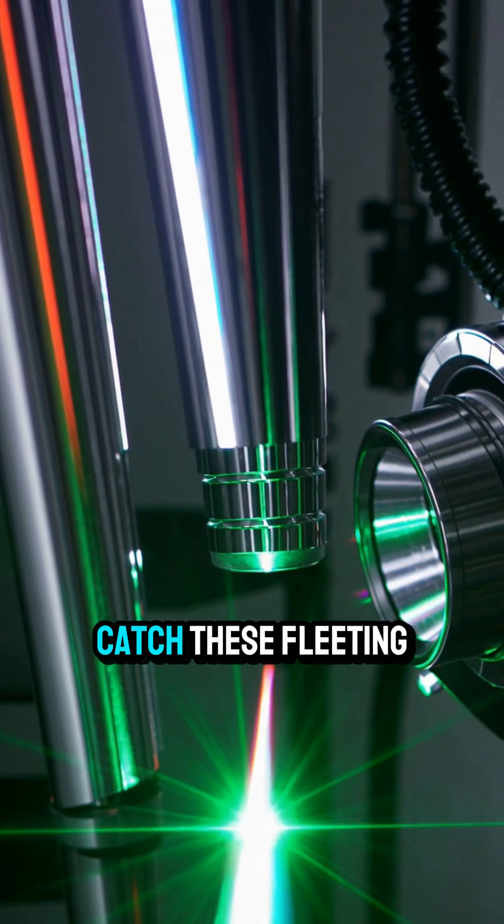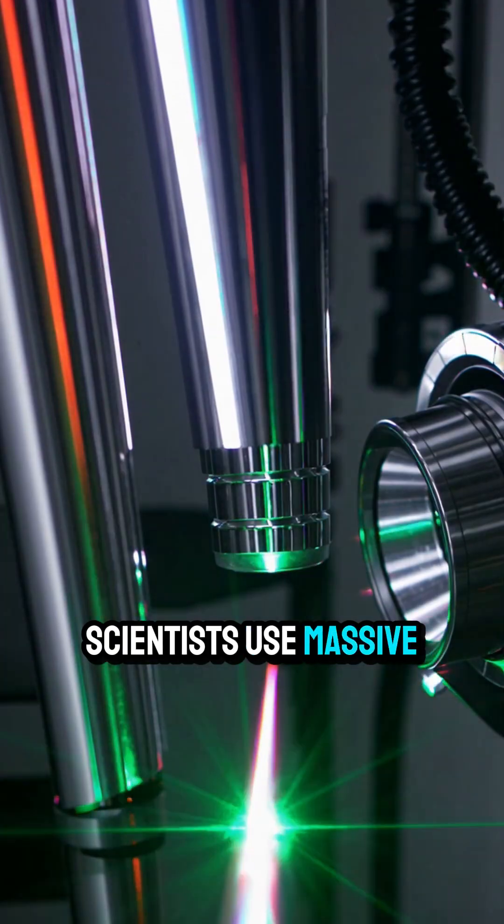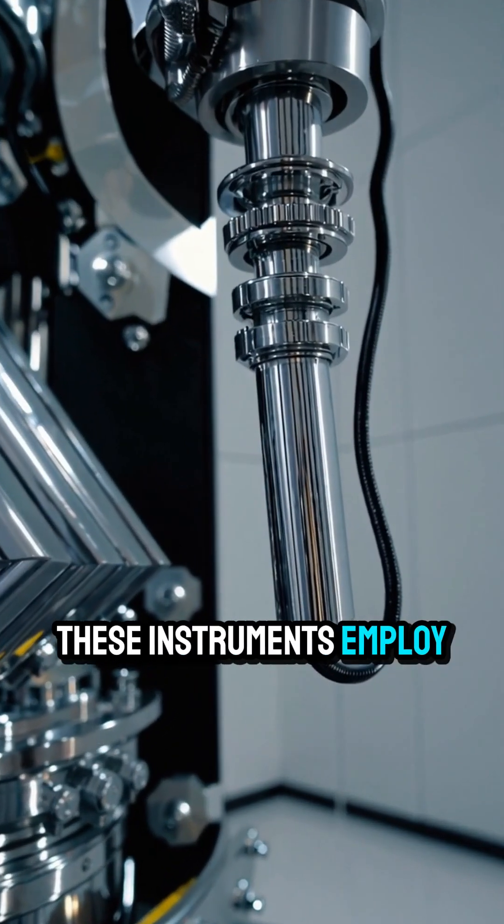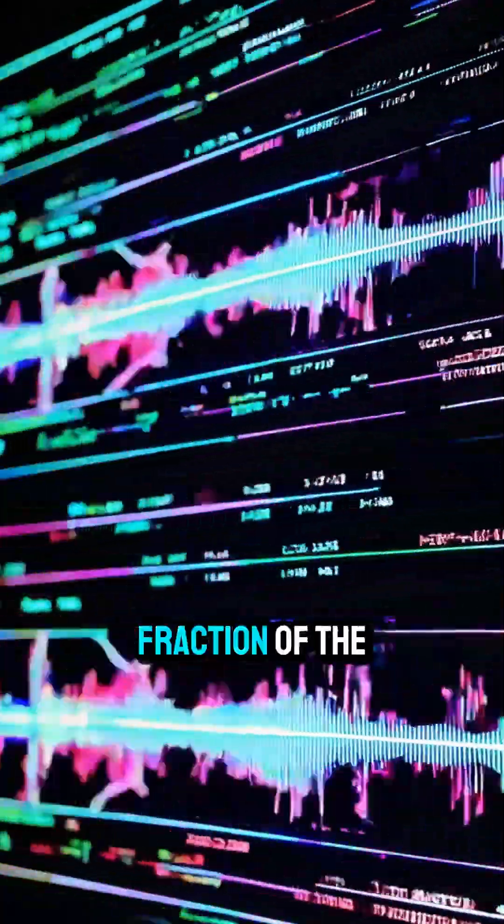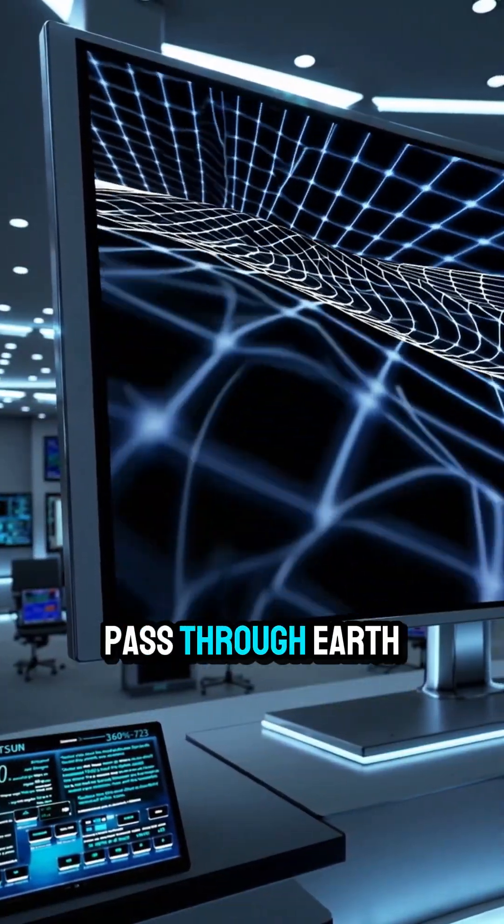How do we detect them? To catch these fleeting ripples, scientists use massive detectors like LIGO and Virgo. These instruments employ laser interferometry to measure minute changes in distance, less than a fraction of the width of a proton, as gravitational waves pass through Earth.